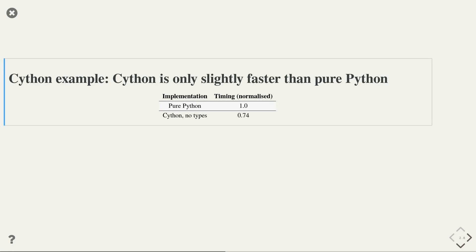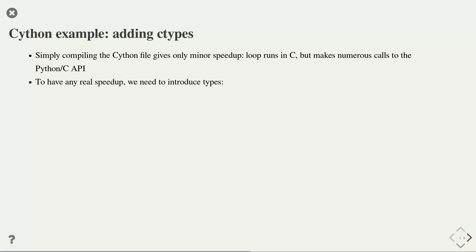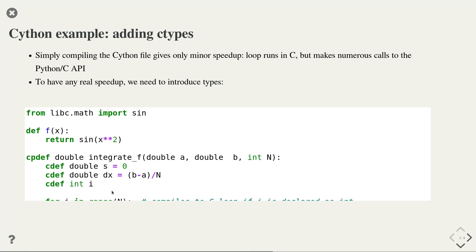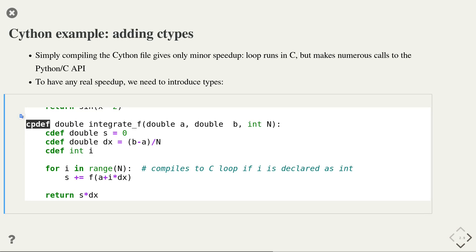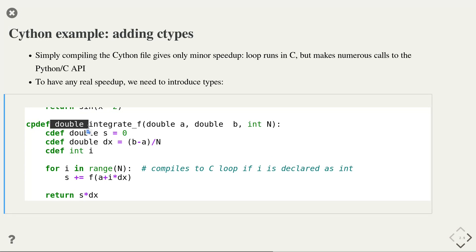We can now compare the timing of our Python implementation versus the Cython-compiled version. If the pure Python implementation took a normalized time of 1.0, then the Cython implementation without specifying any types takes 0.74, or in other words is 26% faster. This is already a good start, but we can gain a lot more by specifying the types. Simply compiling the Cython file only gives a minor speedup because the loop runs in C but we still make various calls to the Python-C API, which is slow. In order to get real speedup, we need to introduce types. We use a cpdef function definition to generate both the C and the Python version of the integrate_f function, and we specify the types of the parameters a, b, and n, as well as the return type as a double.